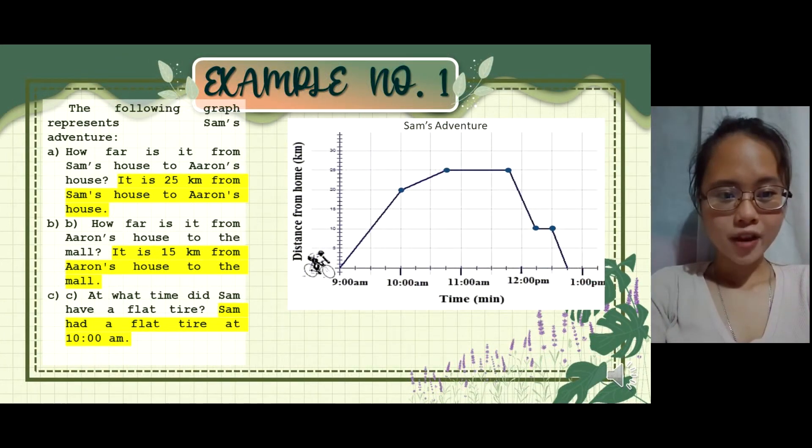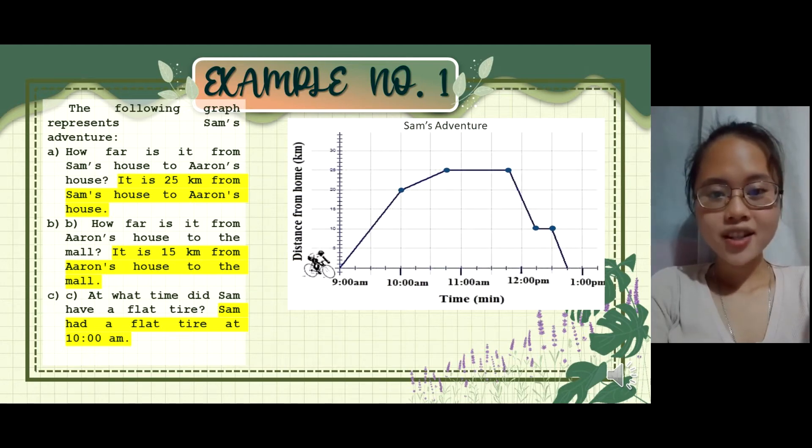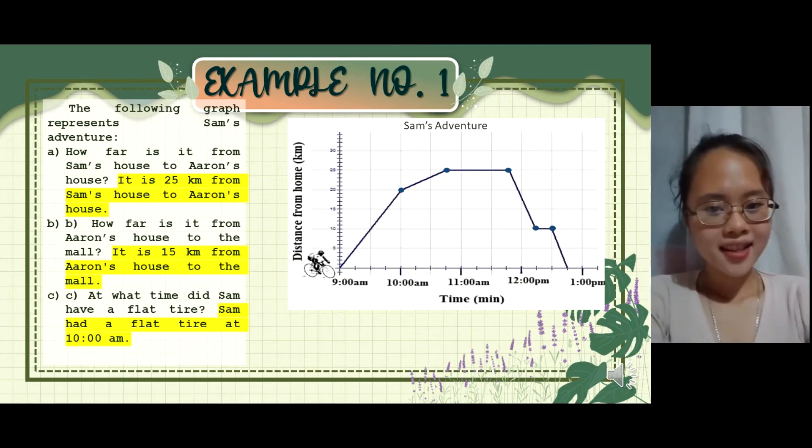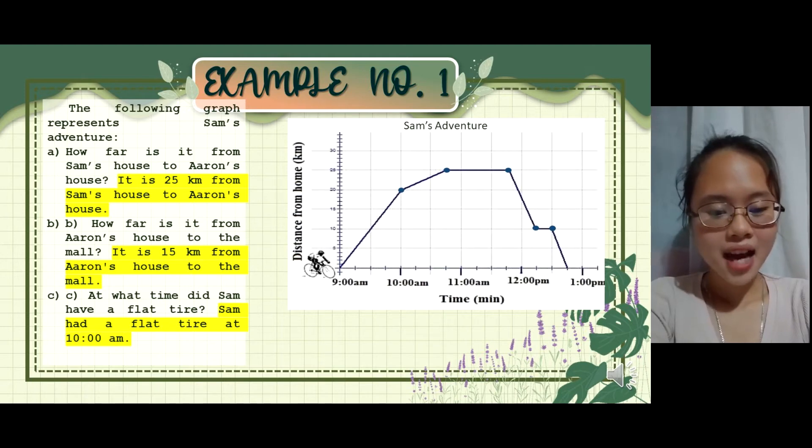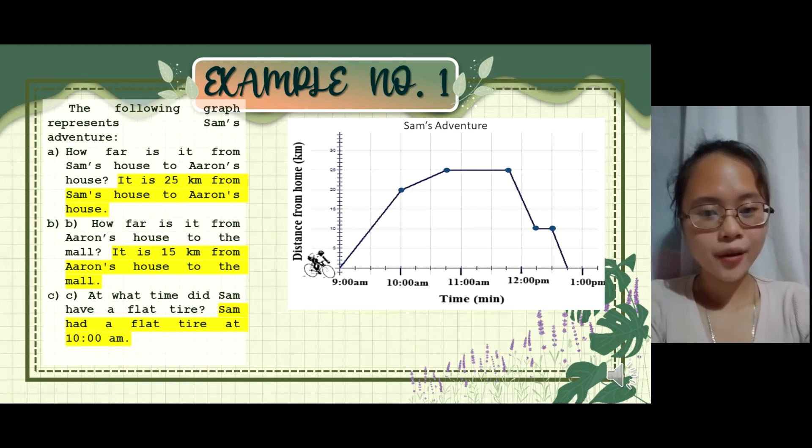So, how far it is from Sam's house to Aaron's house? The answer is, it is 25 kilometers from Sam's house to Aaron's house. The next one is, how far is it from Aaron's house to the mall? The answer is, 15 kilometers from Aaron's house to the mall. And the next question is, at what time did Sam have a flat tire? The answer is, Sam had a flat tire at 10 o'clock a.m. The next question is, how long did Sam stay at Aaron's house? The answer is, Sam stayed at Aaron's house for one hour.